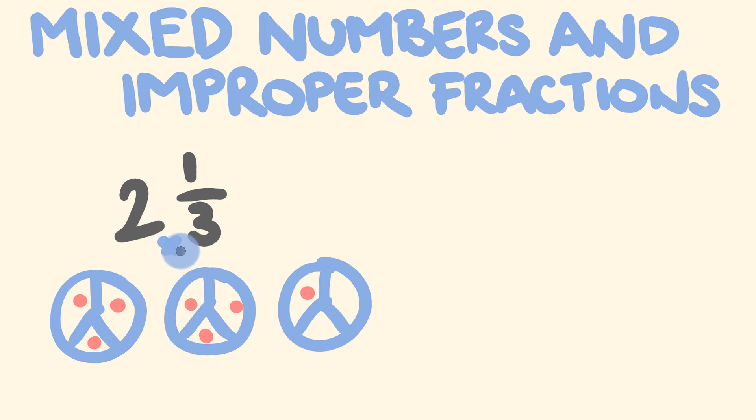So we're going to multiply these guys, and we're going to add this final one at the end. So 2 times 3 is 6, plus 1, we have 7. And the denominator stays the same. So this becomes 7 out of 3.